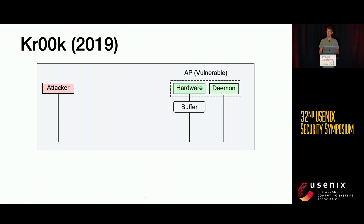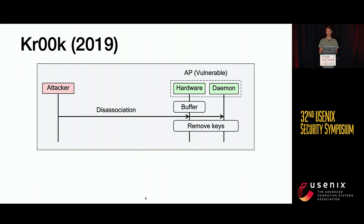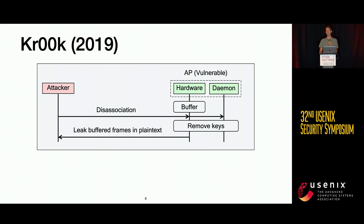Here's how it worked: an access point has data buffered in its hardware chip awaiting transmission onto the spectrum. An attacker can send a disassociation frame, which removes the keys from the access point — effectively overwriting them with all zeros. When spectrum becomes available, the access point transmits this data using the all-zero encryption key.